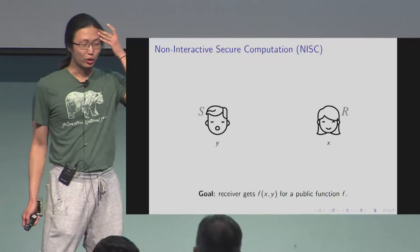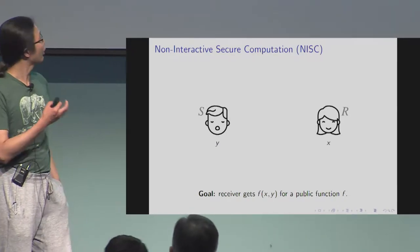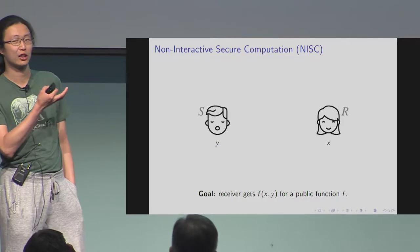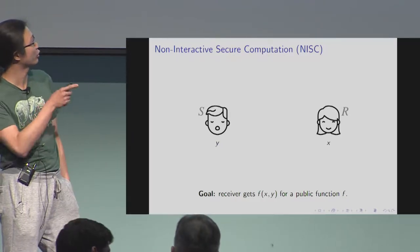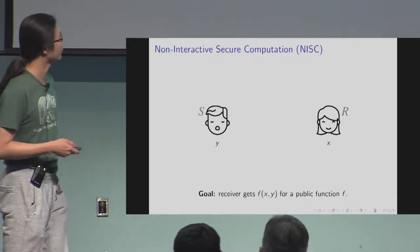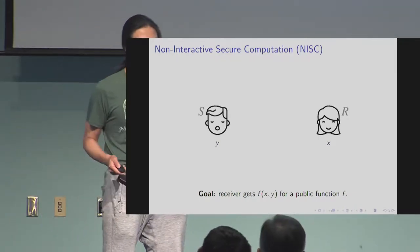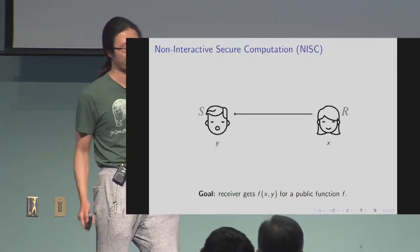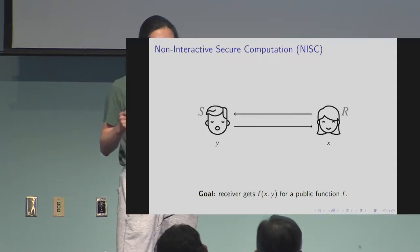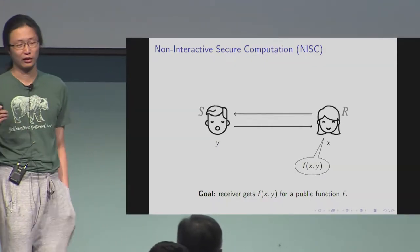So there are two parties, sender and receiver. We're considering the problem where each party has an input, and they want to let the receiver know the function of their joint input. So it's called non-interactive, which means it's a two-message protocol. The receiver sends a message to the sender, and the sender returns a message back. The receiver then knows the output.